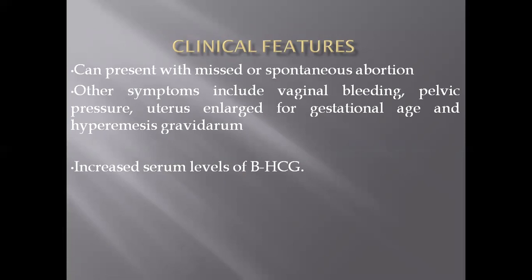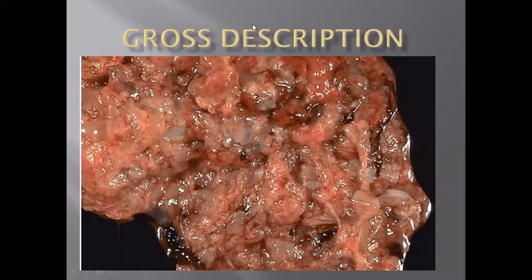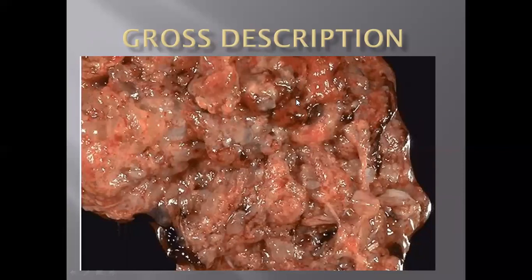The beta-hCG level is increased but never goes beyond 100,000 international units — exceeding this threshold is a common feature of the complete mole. Regarding gross description, there is formation of hydropic villi with a thin white vesicular appearance, scattered hydropic villi along with normal-appearing maternal cotyledons or normal placenta.